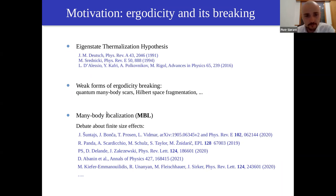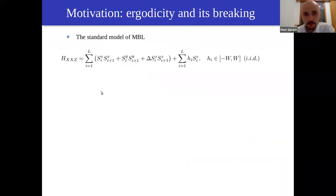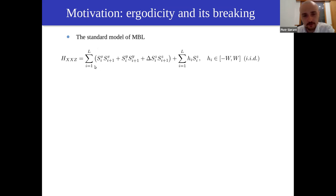In all of those topics, one needs to calculate highly excited eigenstates in the middle of the spectrum of many-body Hamiltonians. As a model Hamiltonian, let me bring up the standard model of many-body localization: the XXZ Heisenberg spin chain, a spin-1/2 model on a one-dimensional lattice with coupling between neighboring spins and disordered on-site magnetic field.